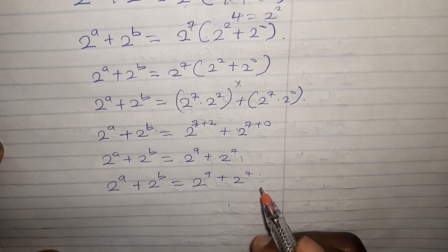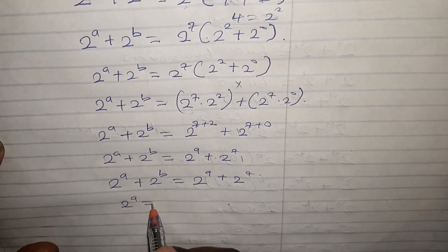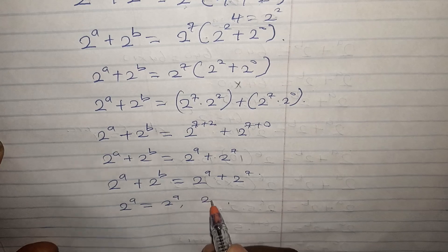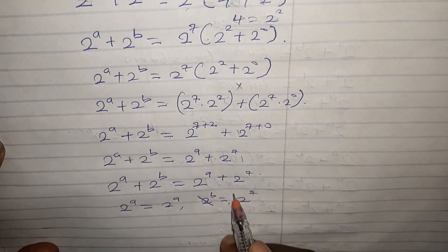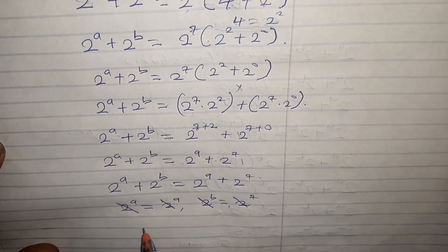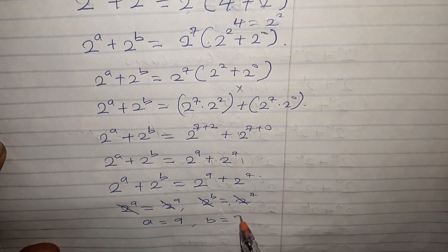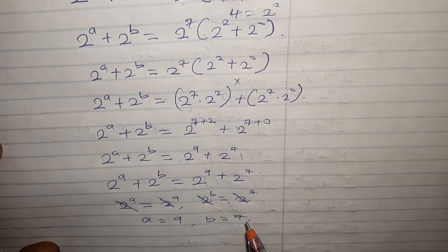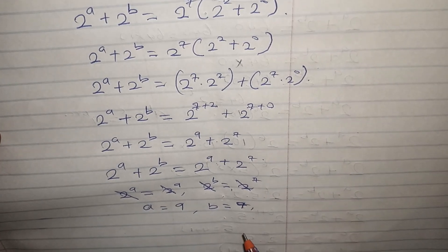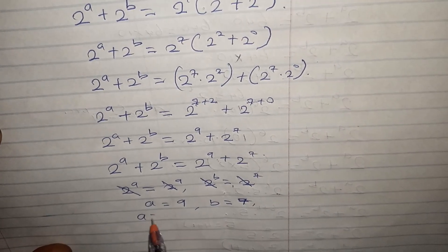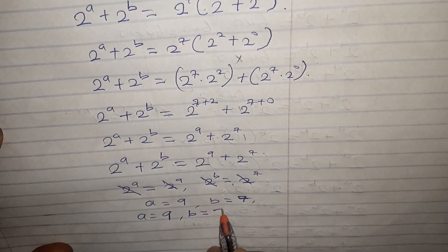By comparison, 2^a equals 2^9 and 2^b equals 2^7. So the bases are the same, meaning a equals 9 and b equals 7. So these are our values: a = 9 and b = 7.